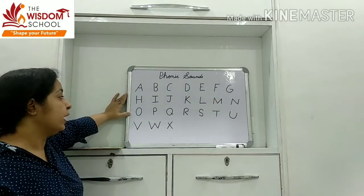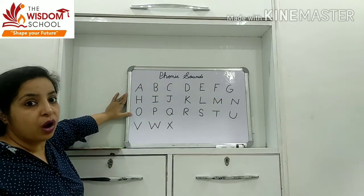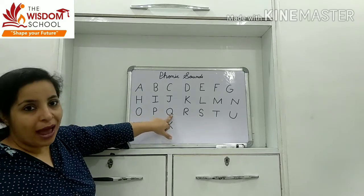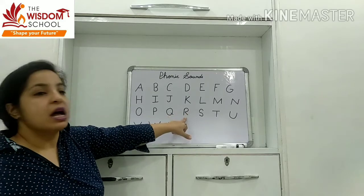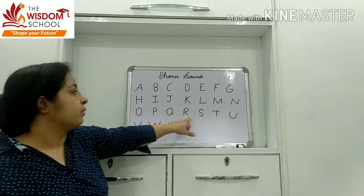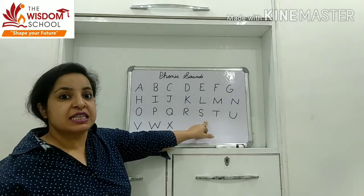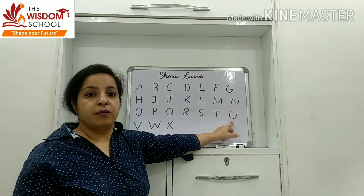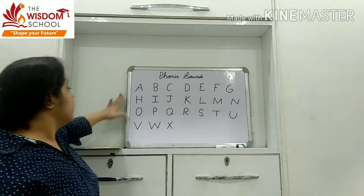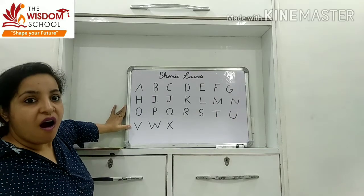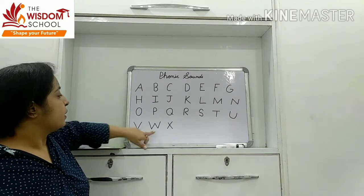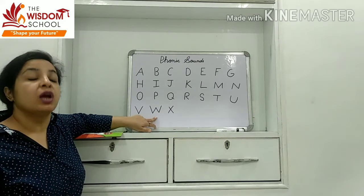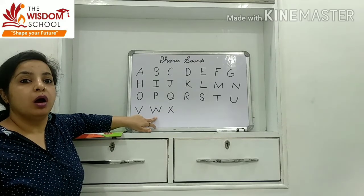Now, see — the sound of letter A is 'a'. Okay? And letter W — 'w', 'w', 'w'. It is W. The sound of letter W is 'w'.